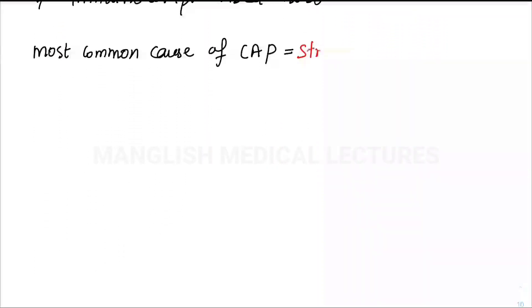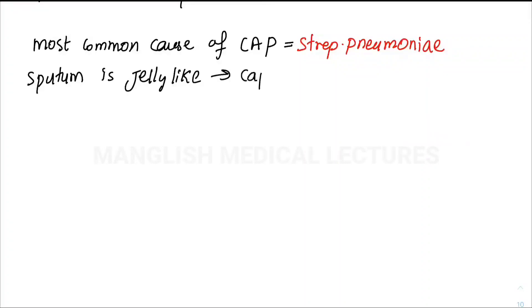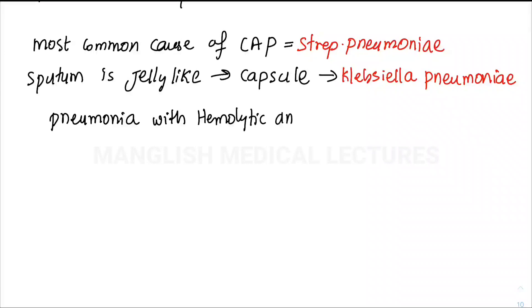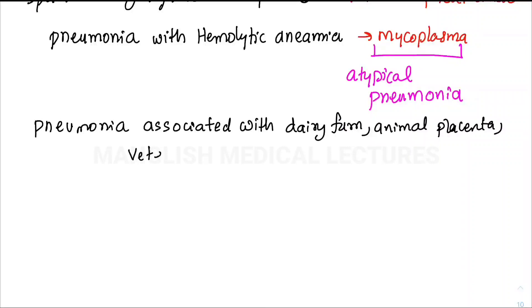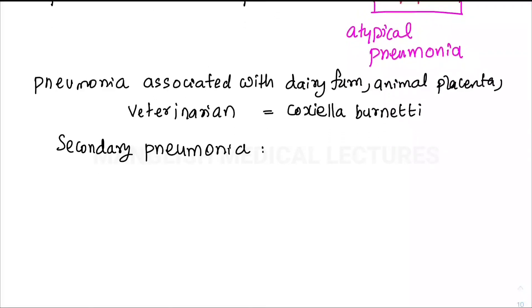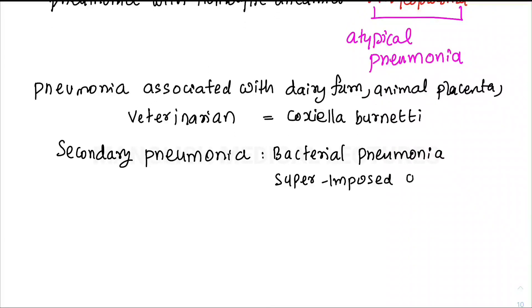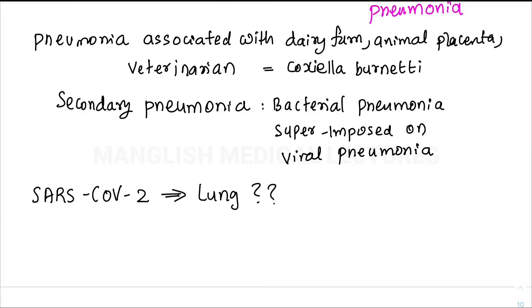The most common cause of community-acquired pneumonia is Streptococcus pneumoniae or pneumococci. If you're having jelly-like sputum, you should suspect Klebsiella pneumonia. Pneumonia associated with hemolytic anemia is seen with Mycoplasma, which is the causative organism for atypical or interstitial pneumonia. Pneumonia from a veterinarian setup like animal placenta or dairy farm suggests Coxiella infection. Secondary pneumonia is bacterial pneumonia superimposed on viral pneumonia. SARS-CoV-2 or COVID-19 enters lung cells utilizing ACE2 receptors on lung epithelial cells and causes ARDS, respiratory distress.